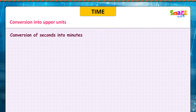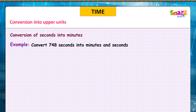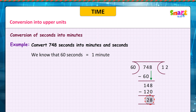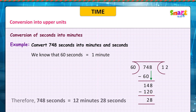Conversion of seconds into minutes. Example: convert 748 seconds into minutes and seconds. We know that 60 seconds is equal to 1 minute. 748 divided by 60: 60 goes 12 times with a remainder of 28. Therefore, 748 seconds is equal to 12 minutes 28 seconds.